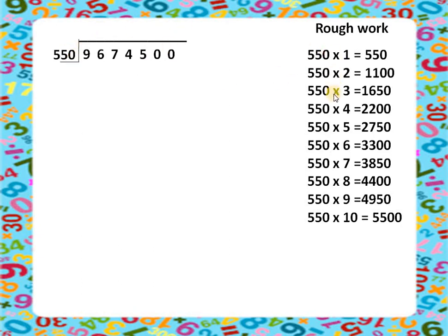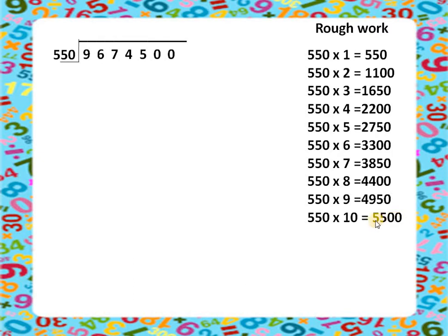We will find all multiples of 550 so we don't get stuck while solving. 550×1=550, ×2=1100, ×3=1650, ×4=2200, ×5=2750, ×6=3300, ×7=3850, ×8=4400, ×9=4950, ×10=5500. The rough work is now complete and we can come back to solving the question.